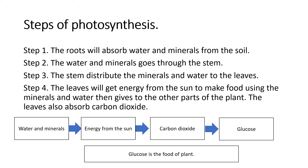Step number 4: the leaves will get energy from the soil. Below these steps you could see the formula. Step number 5: the water and minerals, then energy from the sun, then carbon dioxide, and the last one, glucose — glucose is the food of the plant.